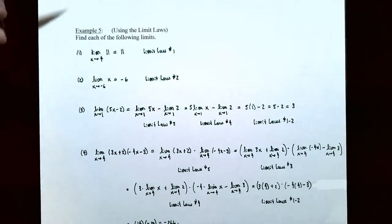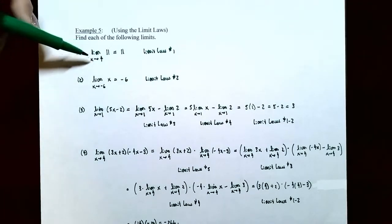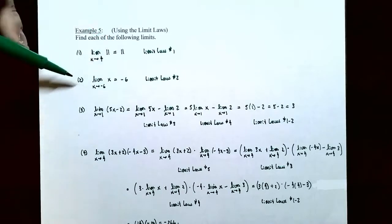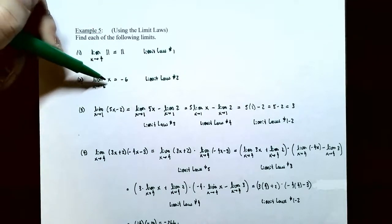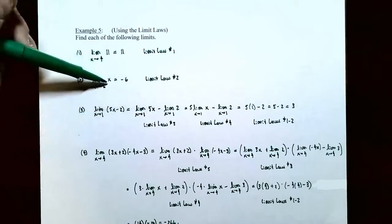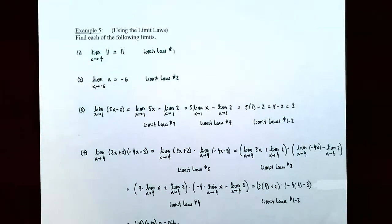Example five: we'll use the limit laws to find limits algebraically. Problem one: find the limit as x approaches 4 of the function f(x) = 11. By limit law one, if the function is just a constant like 11, the limit is simply 11. Problem two: the limit as x approaches negative 6 of f(x) = x. By limit law two, if the function is just x and x is approaching c, the limit is c — so the limit is negative 6.